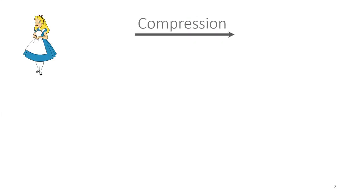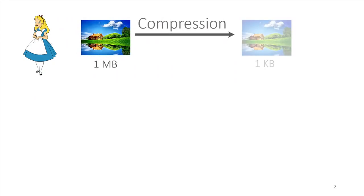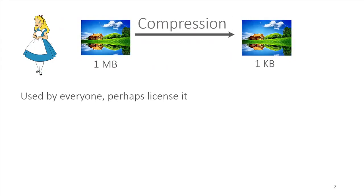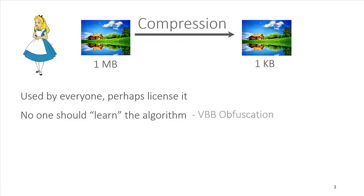Let's say Alice comes up with an amazing compression algorithm which can convert images of size 1 megabyte into images of size 1 kilobyte. She wants everyone to use it and make some money, but the problem is that as soon as she gives the program to someone, they can read what it does, copy it, and not pay her. So she wants to obfuscate her program.